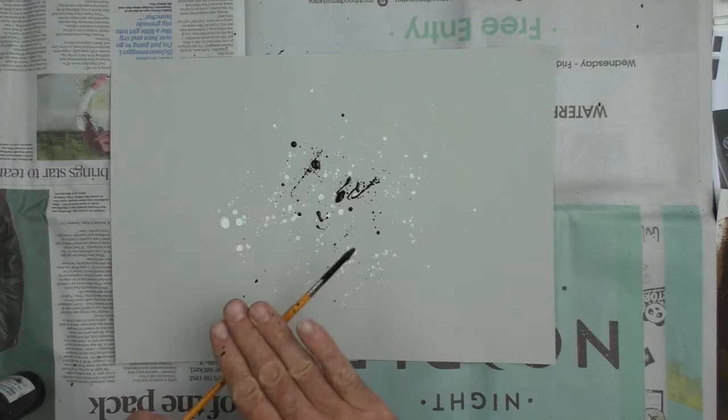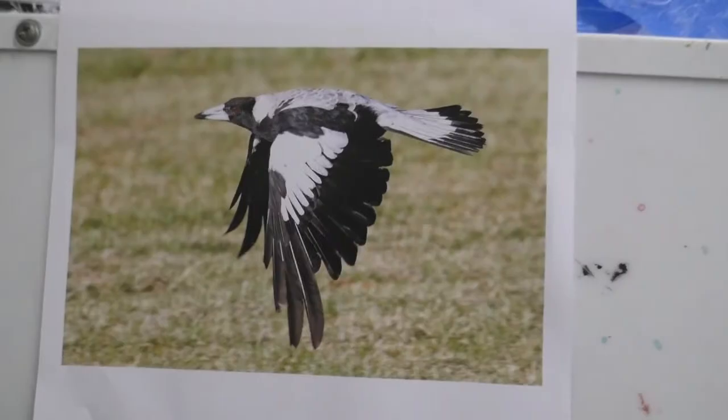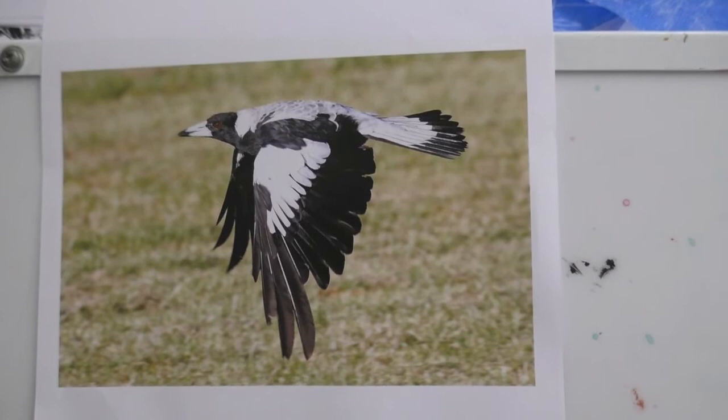When you think you've got that looking pretty good, start splattering black Indian ink on it—not huge big globules of ink, but just keep splattering it, moving the brush in different directions, hitting on top of the brush.